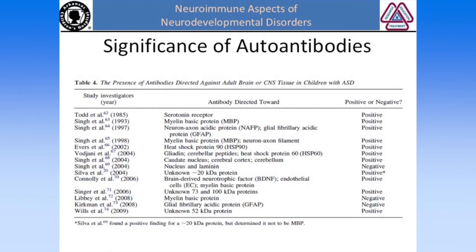Most of these antibody studies have been positive. Some have been negative. Many different antibodies to brain tissue have been found in children with autism. The big question is what is their meaning — do they all disrupt brain development? Further and more recent studies have really driven home the fact that these antibodies can be disruptive as far as brain development is concerned.